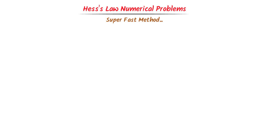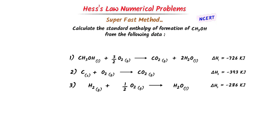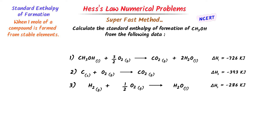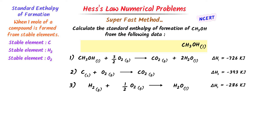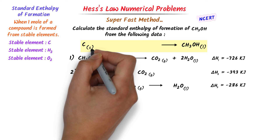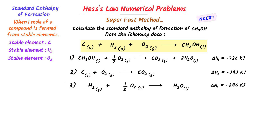Now we will learn numerical problems of Hess's Law. I will teach you the super-fast method to solve any numerical problem in less than a minute. Consider this NCERT numerical problem: calculate the standard enthalpy of formation of methanol from the following data. Standard enthalpy of formation means when one mole of a compound is formed from its stable elements. The stable element of carbon is solid carbon, of hydrogen is H₂ gas, and of oxygen is O₂ gas. Methanol is formed from carbon plus H₂ plus O₂. I balance the equation: there are four hydrogen atoms, so I write 2H₂, and only one oxygen atom, so I write ½O₂.